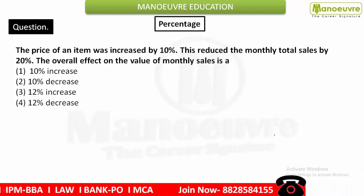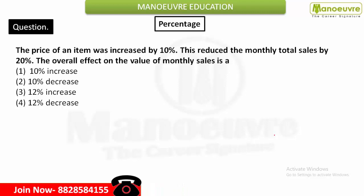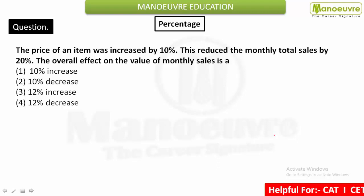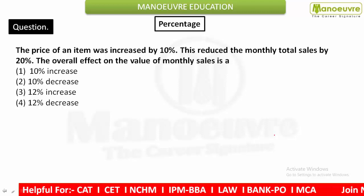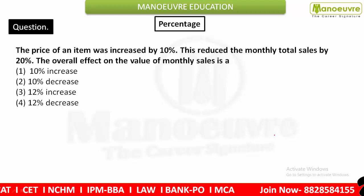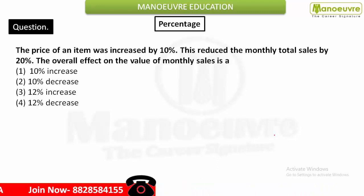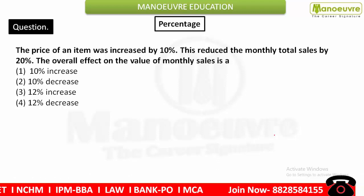Hello everyone, welcome to Maneuver. Today we are going to discuss a question from percentage. The price of an item was increased by 10%, this reduced the monthly total sale by 20%. The overall effect on the value of monthly sales is: (a) 10% increase, (b) 10% decrease, (c) 12% increase, or (d) 12% decrease. This is a Price × Consumption = Expenditure type question.